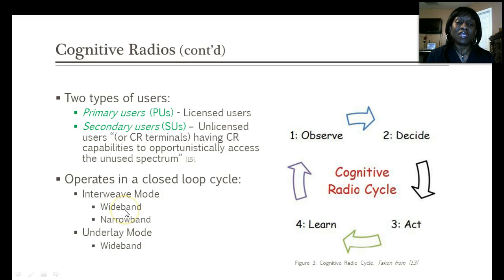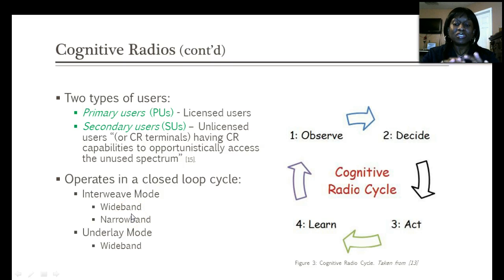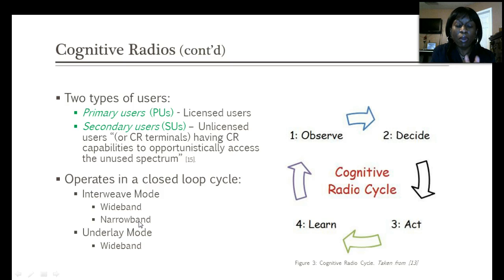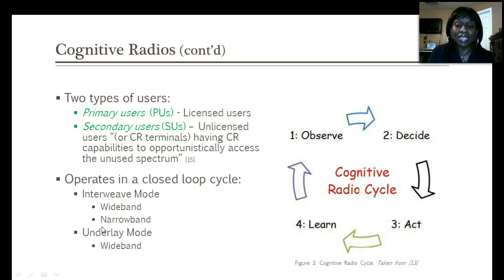In the interweave mode, the cognitive radio looks for possible white space in any frequency being sensed. It will use either wide band, which senses the entire spectrum, or narrow band, which scans specific parts of the spectrum consecutively. In the underlay mode, only the wide band is used; however, it utilizes an ultra wide band signal with reconfigurable notch frequencies that allow secondary users to occupy a large part of the spectrum while minimizing interference with active primary users.